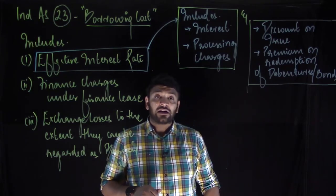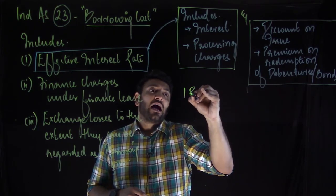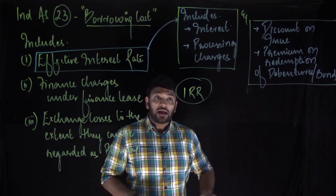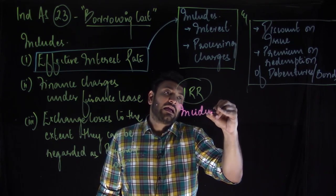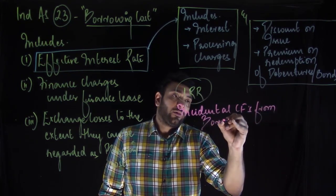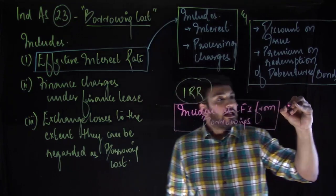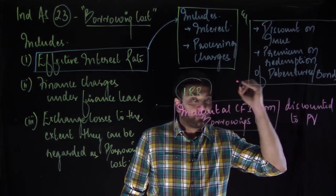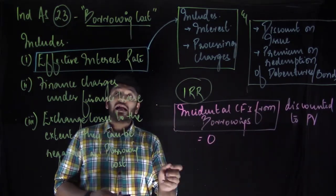How do I identify this effective interest rate? The identification is simple — it is an IRR calculation. To apply this IRR, we look at it from a different perspective. We say the incidental cash flows from borrowings, if discounted to present value, should be exactly equal to zero. The rate at which this holds is the effective interest rate.